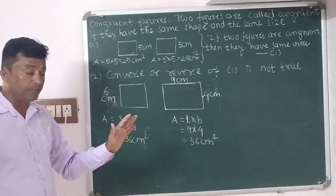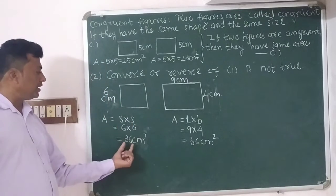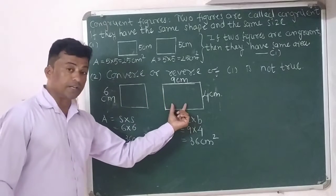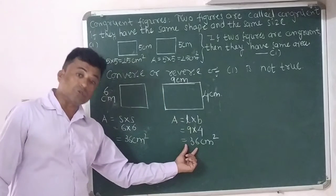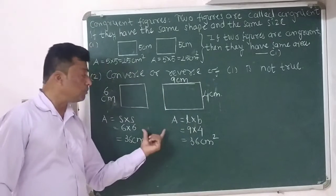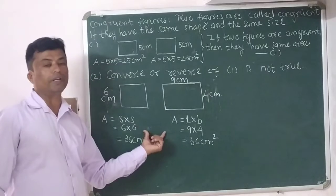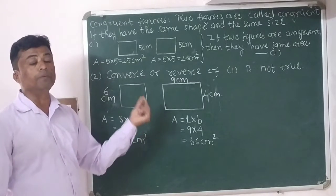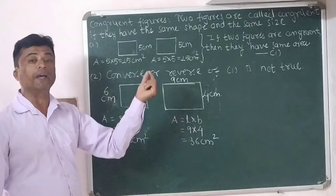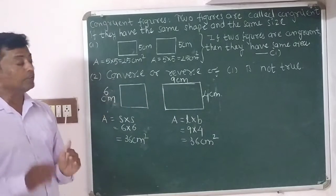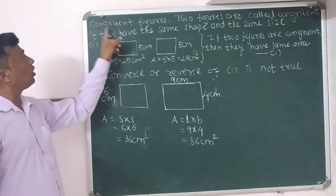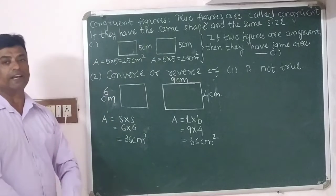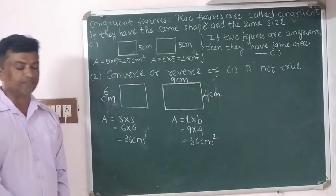Again to summarize: the square has area 36 centimeter square and the rectangle has area 36 centimeter square. Both have the same area, but they cannot be congruent to each other because they have different shape and size. This is the explanation of congruent figures. I hope you understand. Thank you.